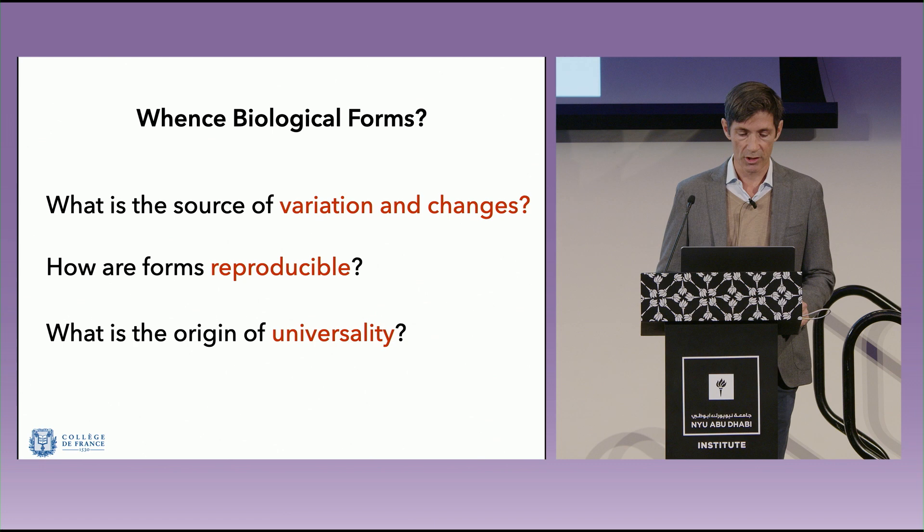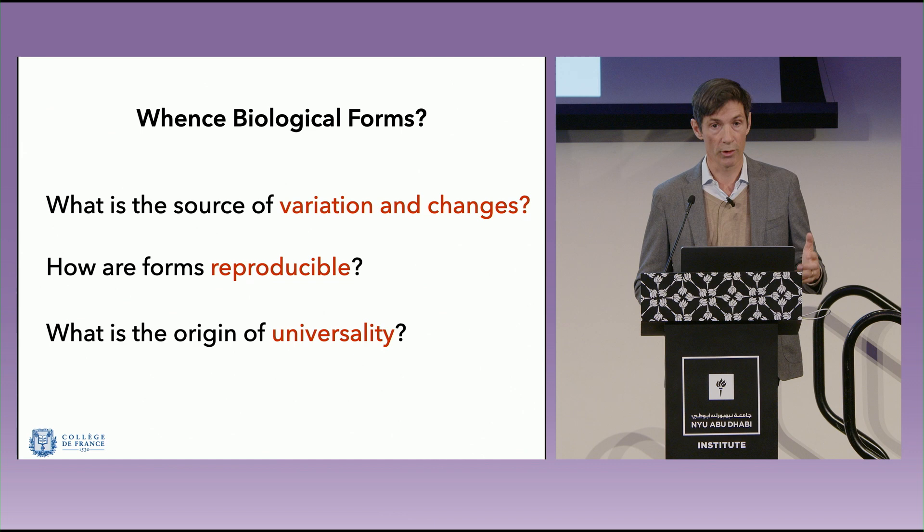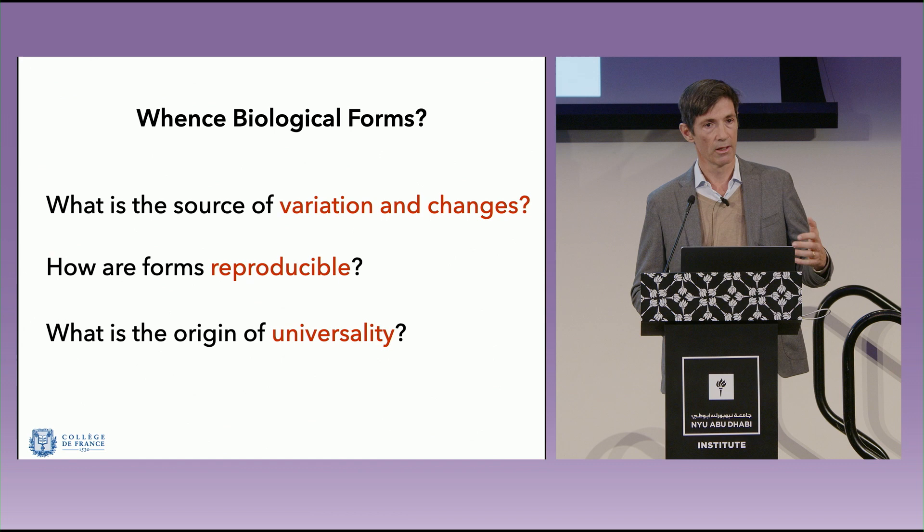Starting from the general question, we can identify three broad questions: What is the source of variation in evolution and changes during development? How are forms reproducible — if you look at a cat and its descendants, they will be similar cats? And what is the origin of universality — the fact that there seem to be reproducible geometric structures seen across scales in different animals and plants?